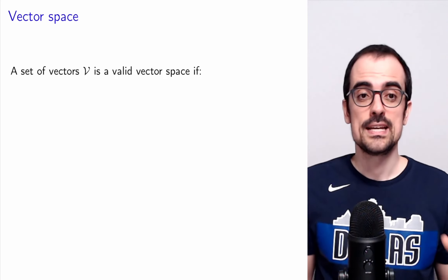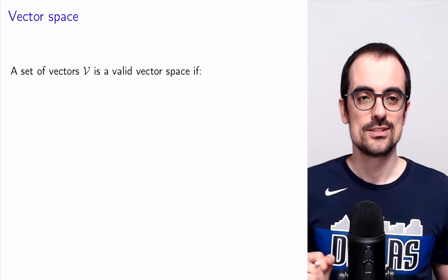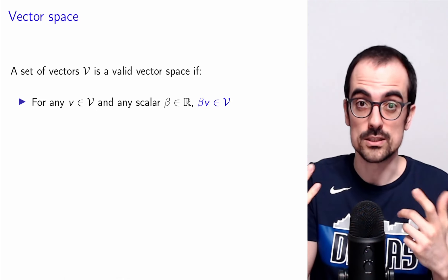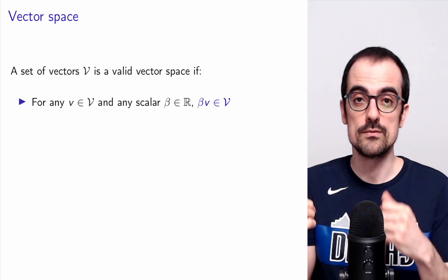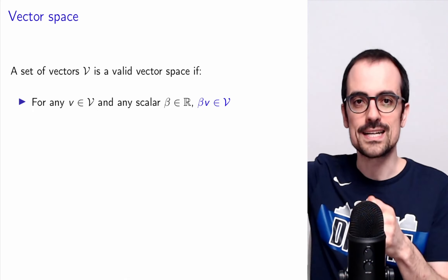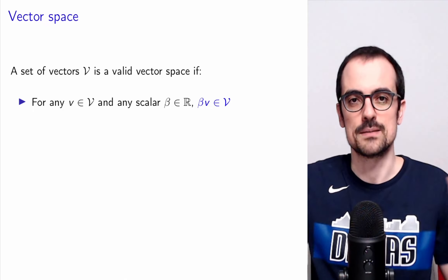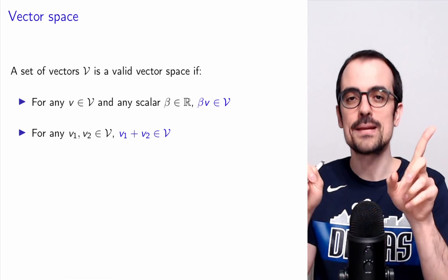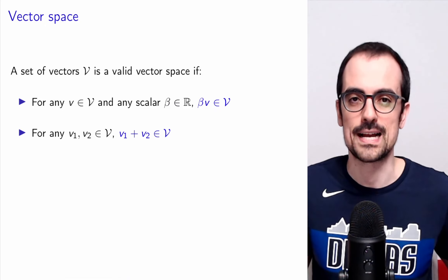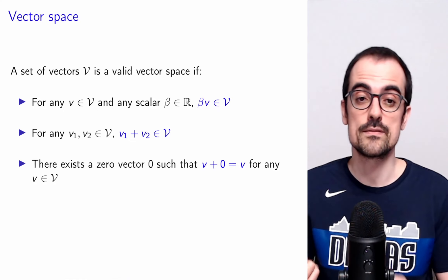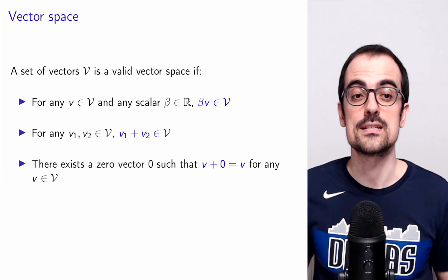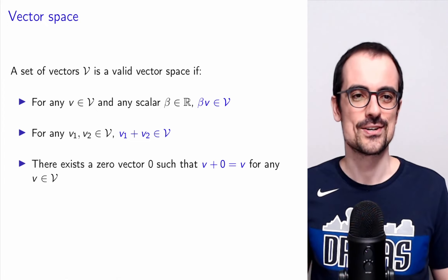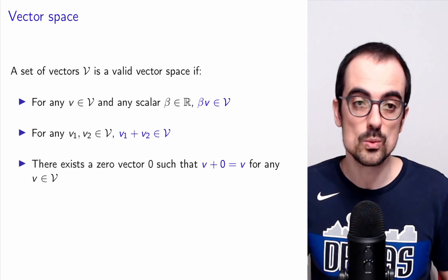A vector space is a set of vectors that satisfies some properties. For any vector and any scalar, if we scale the vector, we get another vector that still belongs to the vector space. Think of R² — if we scale a vector in the plane, the scaled vector always stays in the plane. If we sum two vectors that belong to the vector space, the sum has to stay in the vector space. There must also exist a zero vector such that if you add it to another vector, the vector stays the same. In the case of the plane, that would be the origin, the (0, 0) vector.